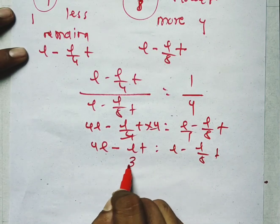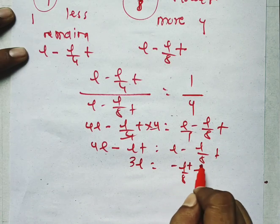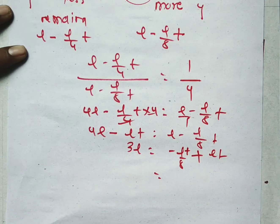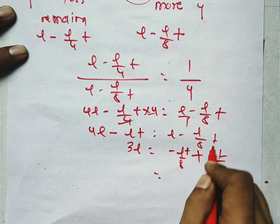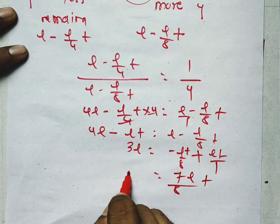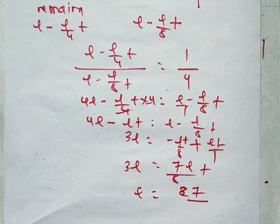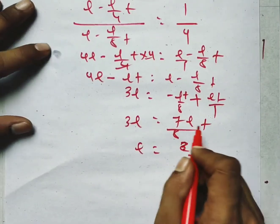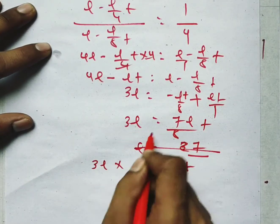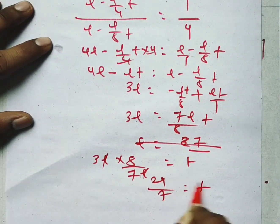Simplifying: 4L minus L gives 3L, and combining the T terms — minus L·T plus L/8·T gives 7L/8·T — so 3L equals 7L/8·T. Cancelling L from both sides, T equals 3 multiplied by 8 over 7, which gives T equals 24/7.